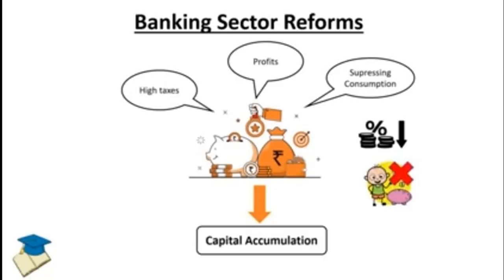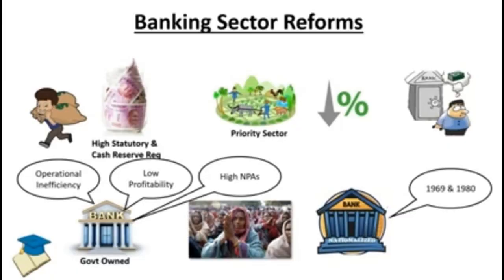Coming to the banking sector reforms — India had a lack of funds till 1990. The government imposed higher taxes on companies and accumulated large funds. It also discouraged lavish expenses, so the common people tried to save more rather than spending more. All these funds accumulated in the banks and were used for investment and economic growth. The PSU banks were under government control and were doing priority sector lending, lending only for recognized priority sectors. During this period, there were operational inefficiencies in the banks, low profitability, and very high NPA. At this point, banking sector reforms were undertaken.